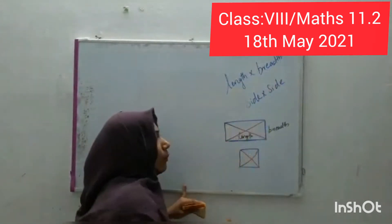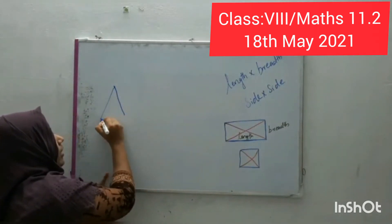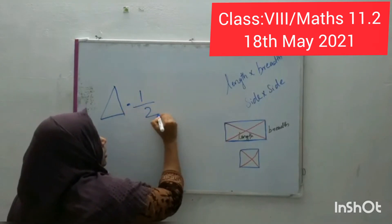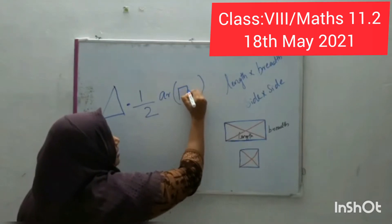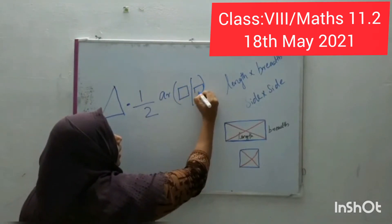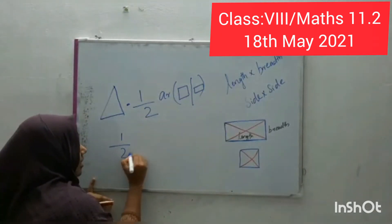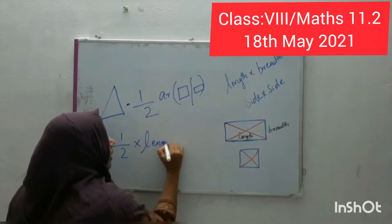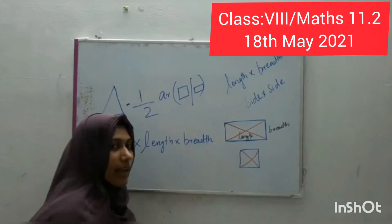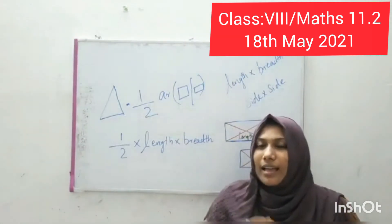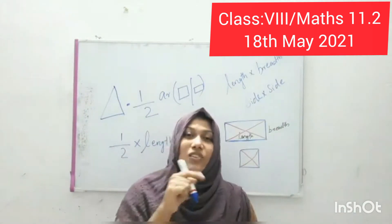The total area is length into breadth, or side into side. So the area of a triangle will be half into the area of the rectangle or square. Simply, we can write it as half into length into breadth. Now you understand why I told you to take a rectangle to find out the area of a triangle.